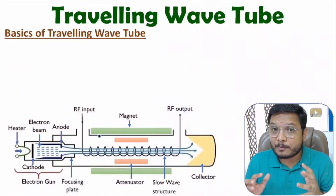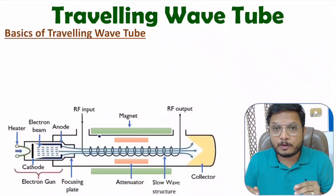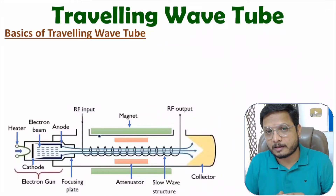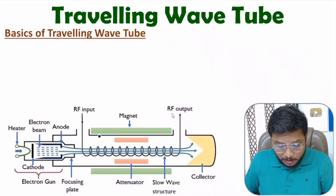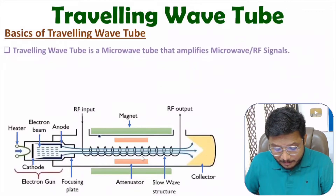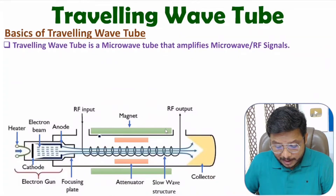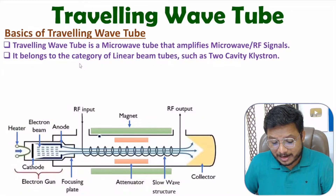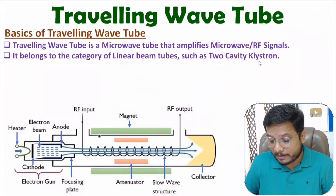Traveling wave tube is a microwave tube which we use to amplify RF or microwave signals. We provide RF input and take RF output — using the traveling wave tube we amplify the RF signal. Traveling wave tube belongs to a category of linear beam tubes, such as the two-cavity klystron.